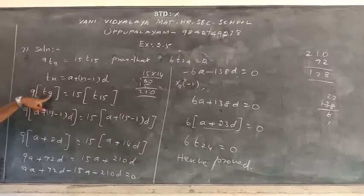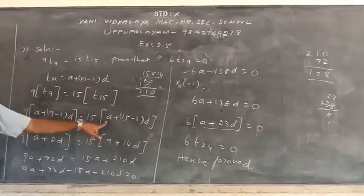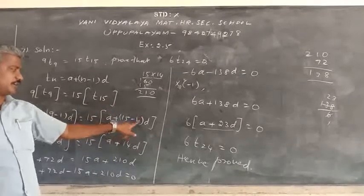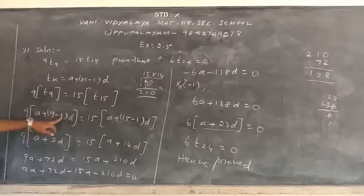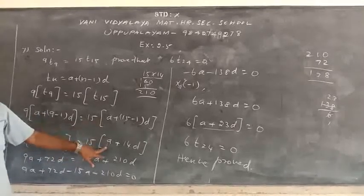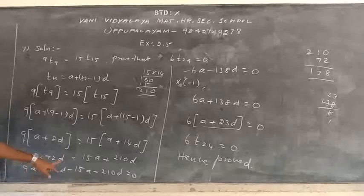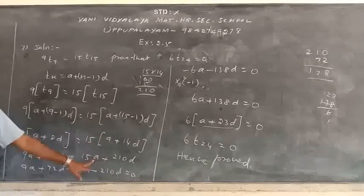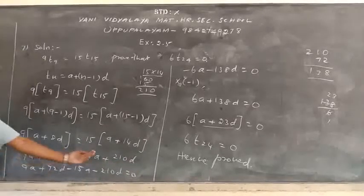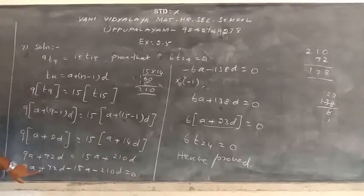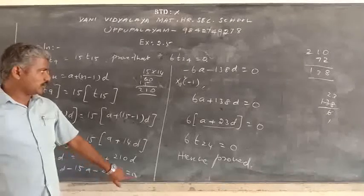TN equal to A plus N minus 1 into D. So 15 minus 1 into D. TN equal to A, 9 minus 1 into D is equal to 15A, 15 minus 1 into D. 9 into, 8 nines are 72D. 15A plus 15 into 14D, 210D.